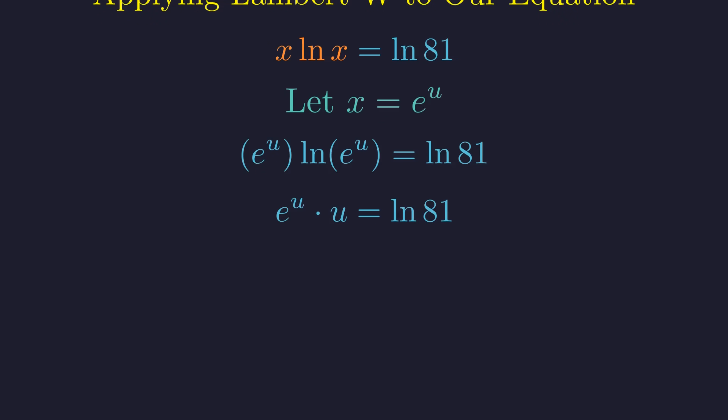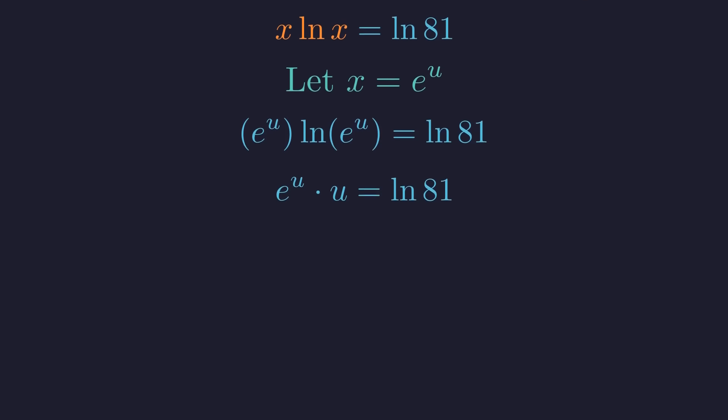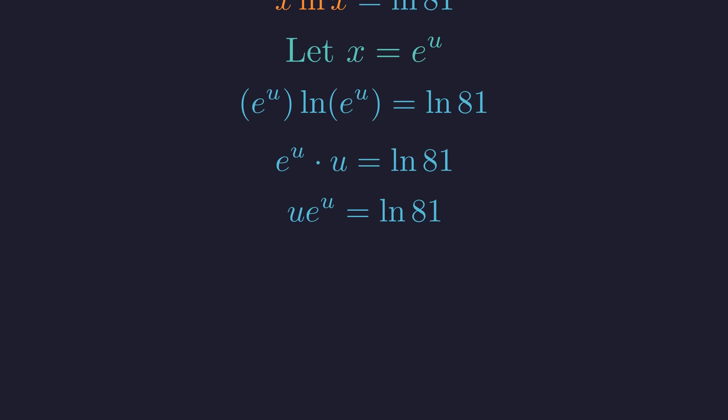Since the natural log and the exponential are inverse functions, the natural log of E to the u simplifies to just u. Rearranging the terms, we have now arrived at the canonical form. The equation is perfectly structured to be solved by the Lambert W function.